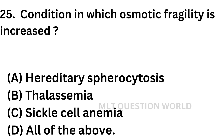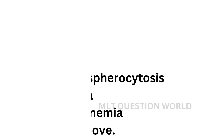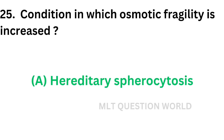Question number twenty-five: Conditions in which osmotic fragility is increased — Option A: Hereditary spherocytosis, Option B: Thalassemia, Option C: Sickle cell anemia, Option D: All of the above. The correct answer is Option A — Hereditary spherocytosis.